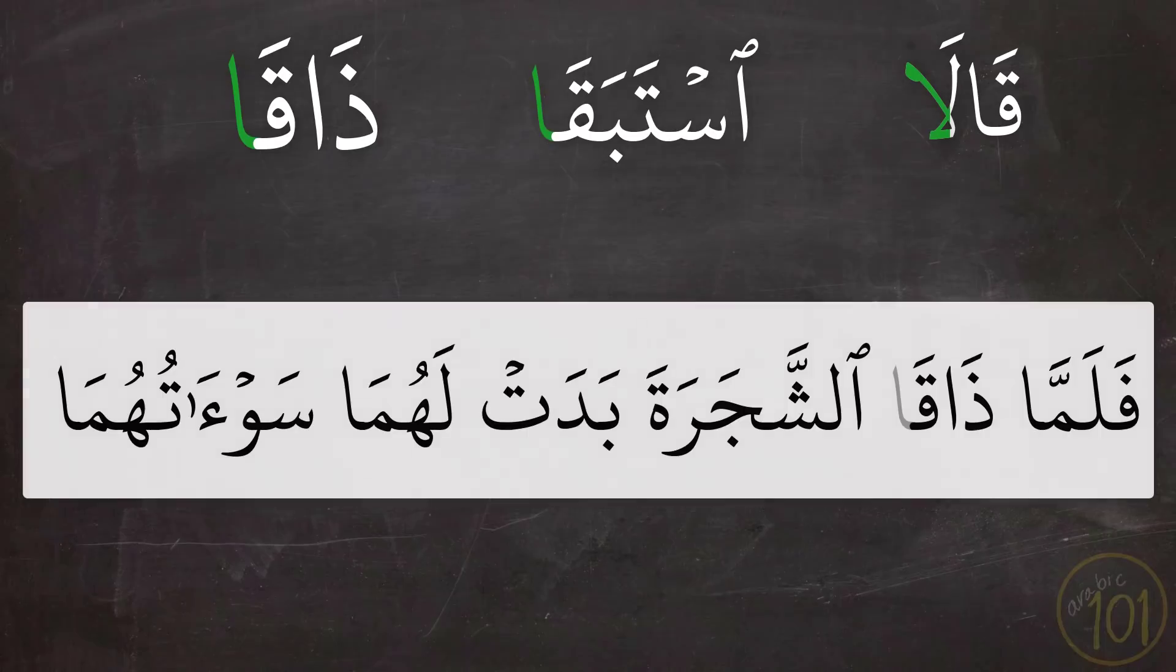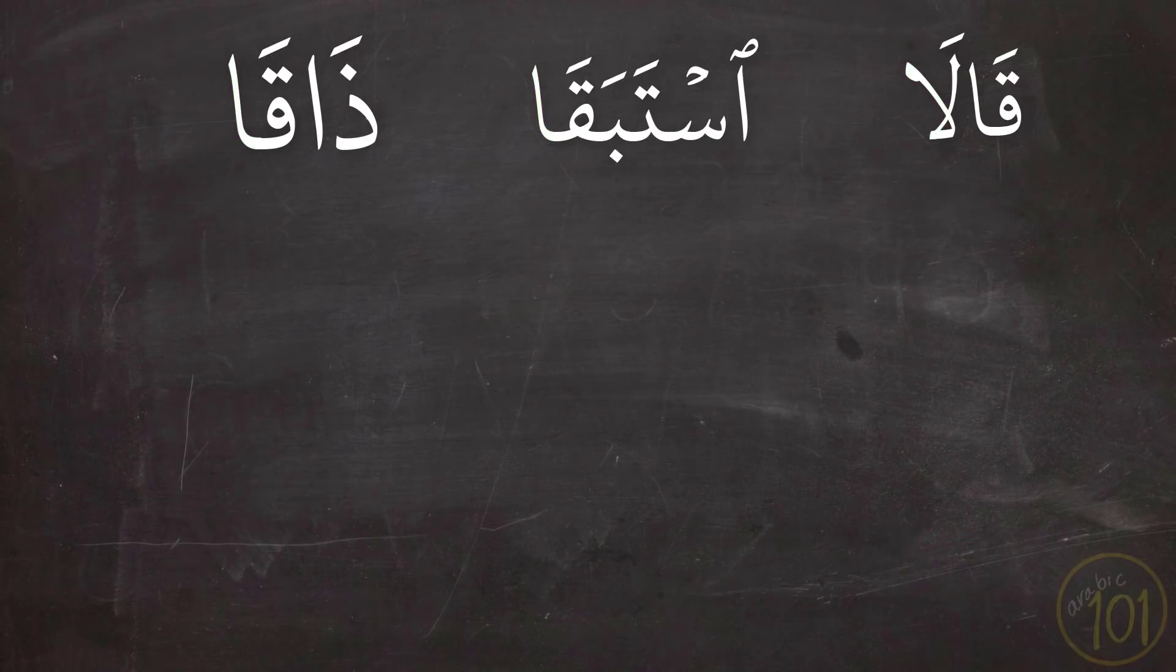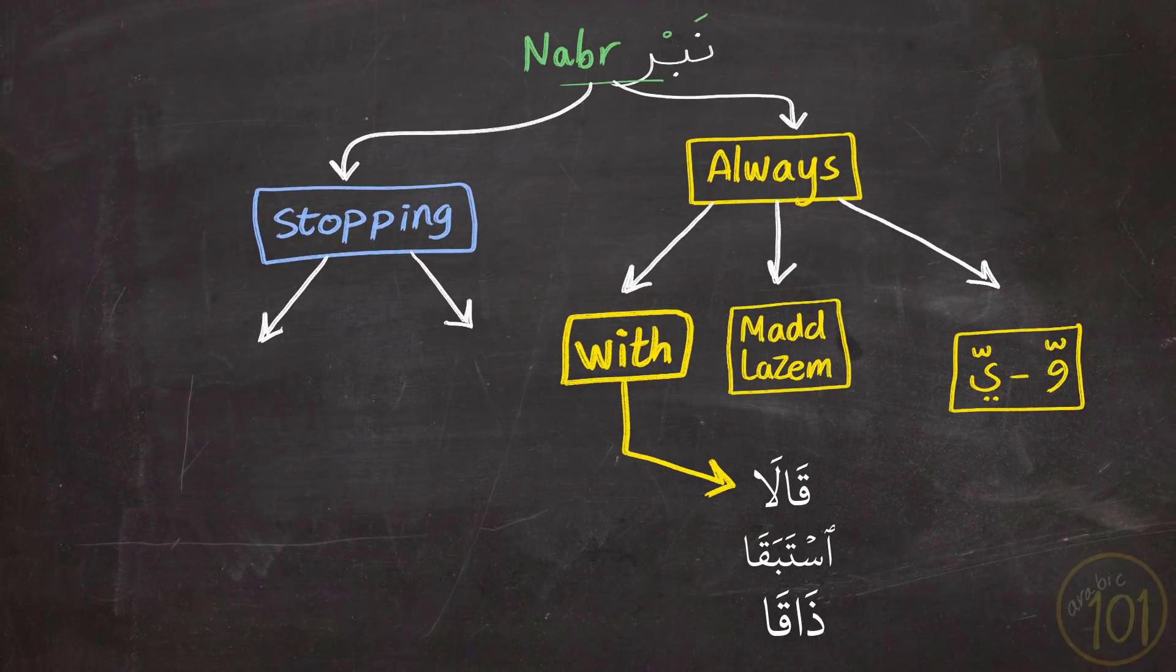One more example: فَلَمَّا ذَاقَ الشَّجَرَةَ بَدَتْ لَهُمَا سَوْآتُهُمَا. So we say ذَاقَ الشَّجَرَةَ instead of ذَاقَ الشَّجَرَةَ, because ذَاقَ الشَّجَرَةَ would be singular.